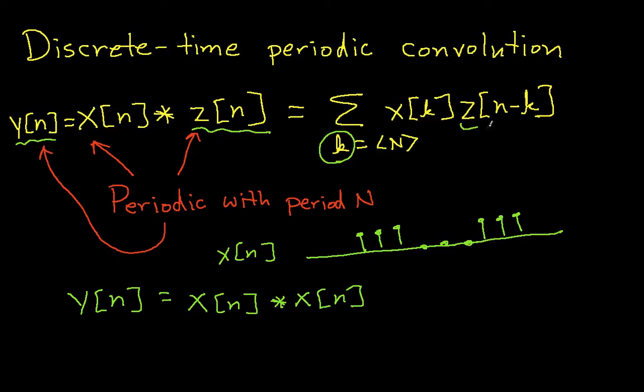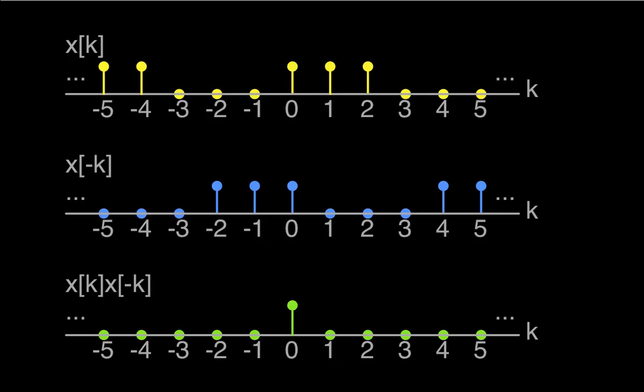We'll take the second signal, we'll flip it and shift it by N. So if we go to a picture, this is the X that we're going to convolve with itself. Again, it's a periodic square wave, three samples up, three samples down, and so on.